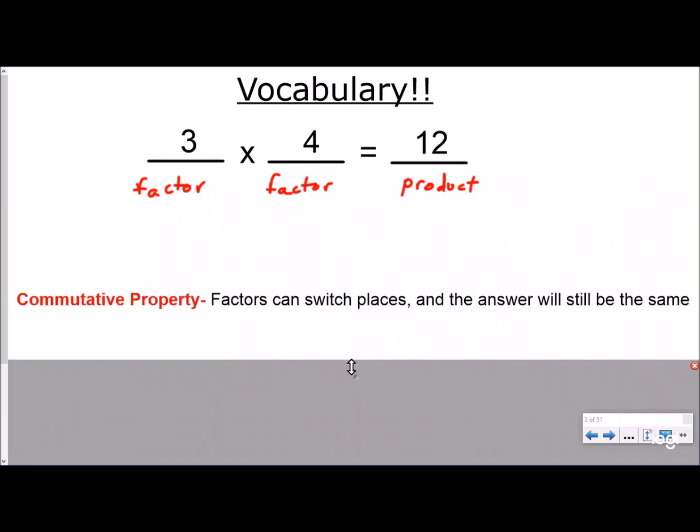Now there's something very special about multiplication, and multiplication has a couple different rules that we call properties, but the one we're focused on right now is the commutative property. Factors can switch places and the answer will still be the same. So three times four is twelve, and if I switch my factors and make it four times three, my answer is still twelve.